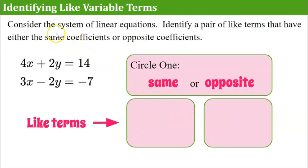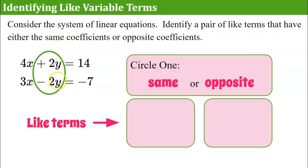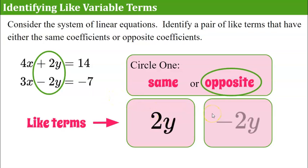Now consider the system of linear equations here and identify a pair of like terms that have either the same coefficients or opposite coefficients. Pause the video now and come back when you're ready. Welcome back! The y variable terms have opposite coefficients: 2y and negative 2y, where 2 and negative 2 are opposite values. The other like variable terms are 4x and 3x, and 4 and 3 are neither the same nor opposite.